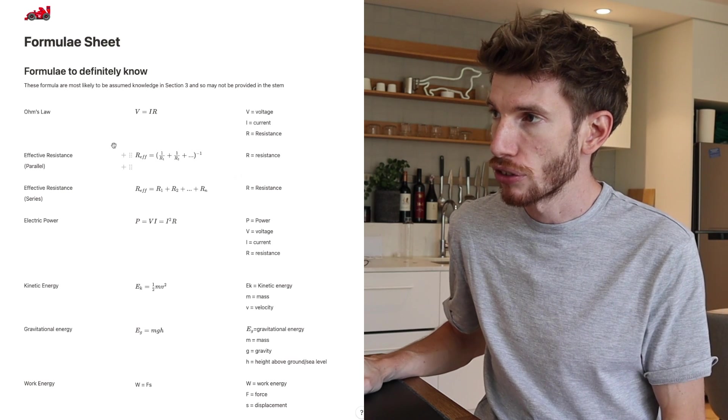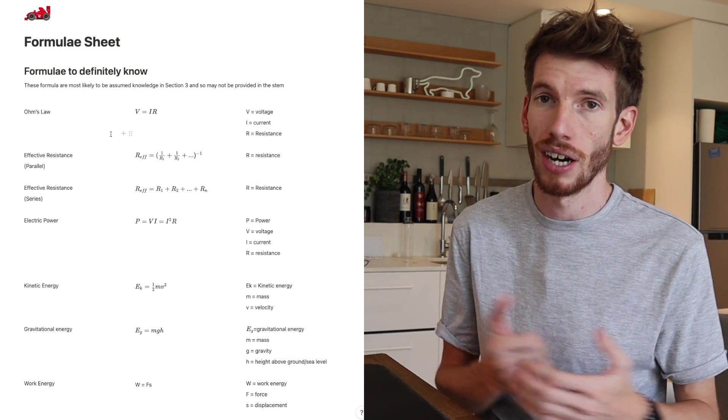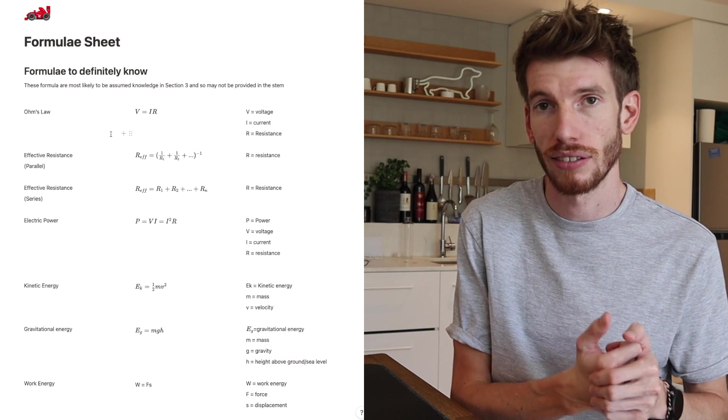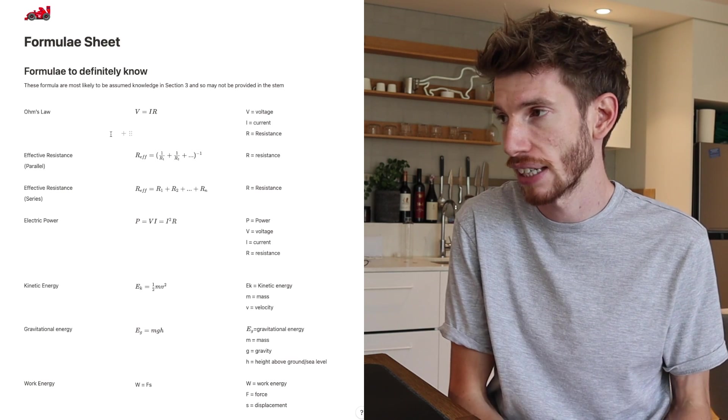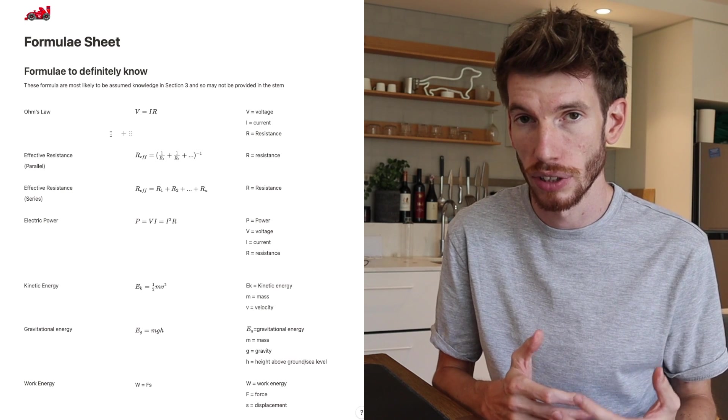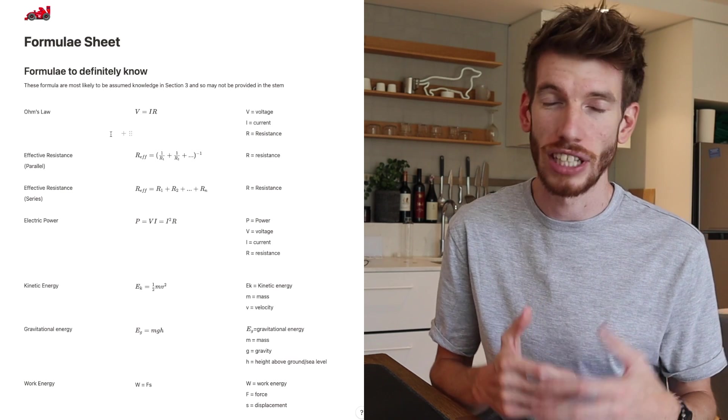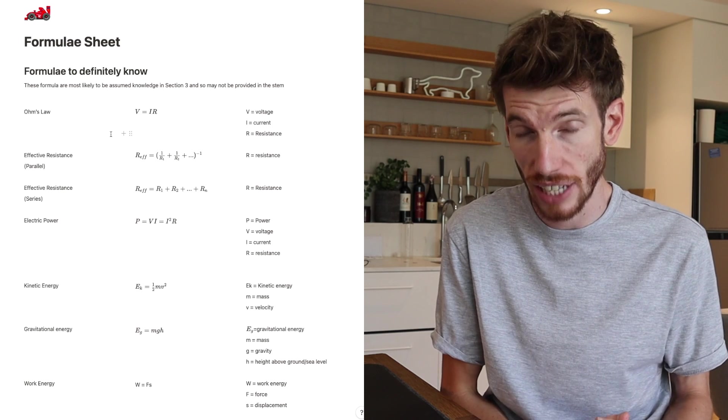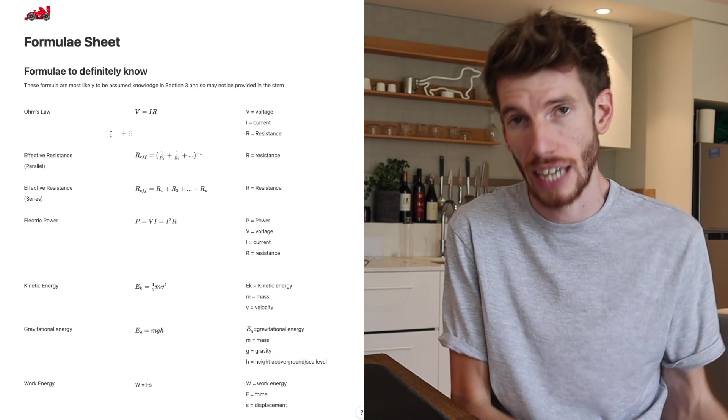So there is the formula to definitely know and then the useful formula to know. So the formulas to definitely know are ones that I think based on the past ACER practice tests and things like that and anecdotal evidence, these are formulas that are most likely to be assumed knowledge. So these are formulas they don't necessarily have to provide you in the stem and you may have to actually use to then tackle the questions.